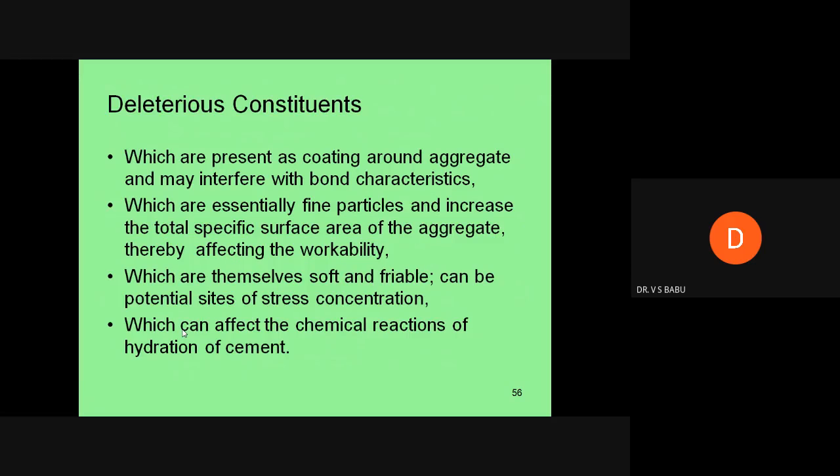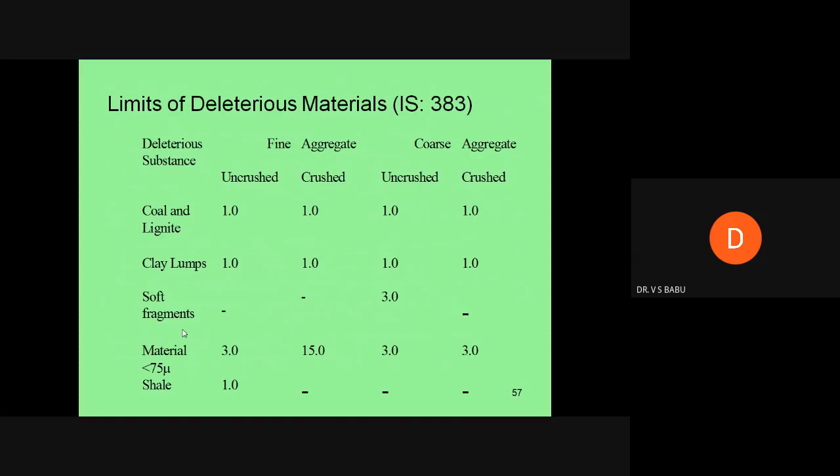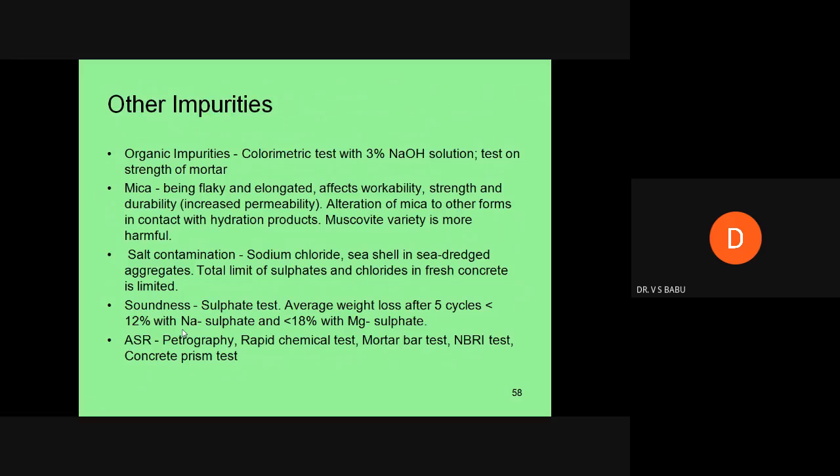Deleterious constraints are unwanted materials like coal, lignite. The limits are given in IS 383. You should know that limits for deleterious materials are available as per IS 383, but you don't need to memorize the entire table.